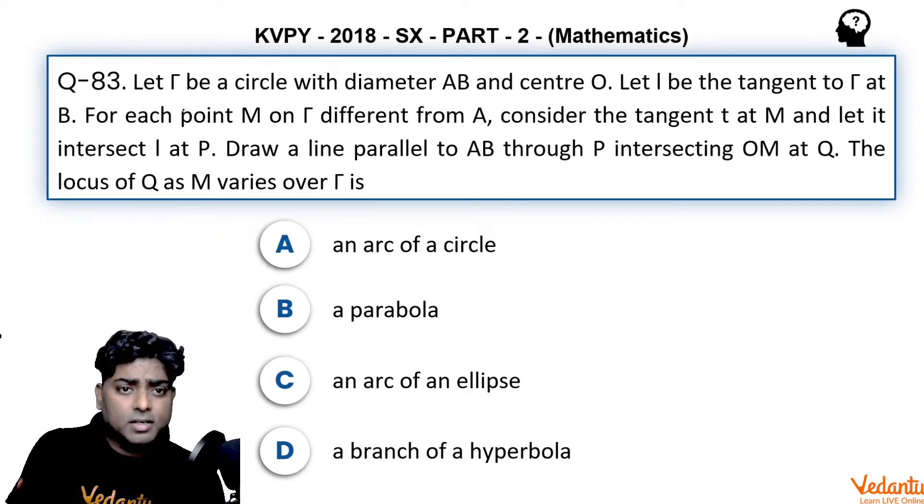Question number 83: Let Γ be a circle with diameter AB and center O. Let I be the tangent to Γ at point B.